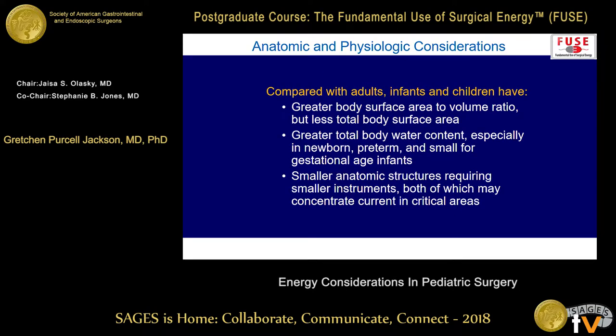Compared with adults, infants and children have a greater body surface area to volume ratio but less total body surface area — meaning less real estate for your operative site, monitoring devices, and dispersive electrode. Less surface area to volume ratio also means areas of high resistance are in close proximity to areas of low resistance, so the path and behavior of current may be much less predictable than in adults.